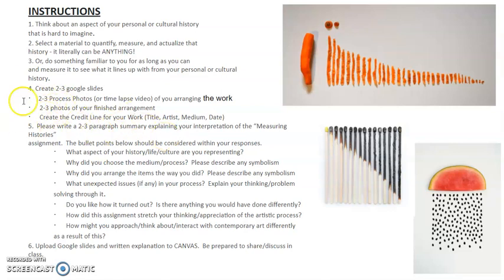You will need to come up with your credit line information — a title, your name as the artist, and the medium. It could be a video, an installation, or a sculpture. Think about what that medium is, and of course the date. You're also going to write a brief two to three paragraph summary explaining how you interpreted this assignment, keeping in mind the bullet points on the slide. You are going to submit this in two different ways: sharing the Google Slides in a shared folder on Canvas, and also sharing snips of your Google Slides and your written explanation directly to Canvas.